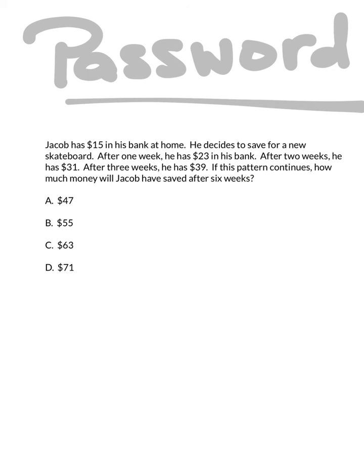Now let's take a look at tonight's password. Jacob has $15 in his bank at home. He decides to save for a new skateboard. After 1 week he has $23, after 2 weeks he has $31, after 3 weeks he has $39. If this pattern continues, how much money will Jacob have saved after 6 weeks? Is it $47, $55, $63, or $71? Be sure to work this one out, record it in your journal, and bring it with you to class tomorrow.